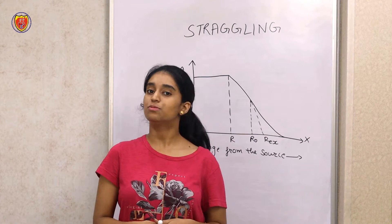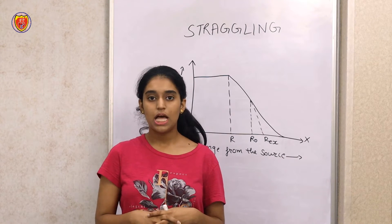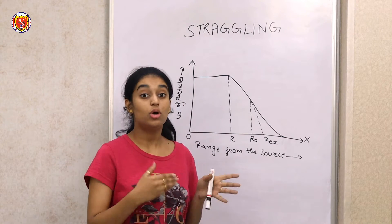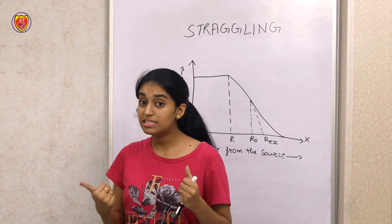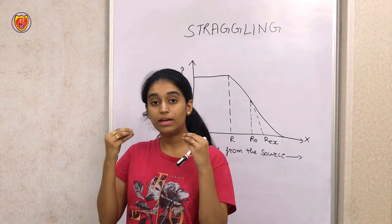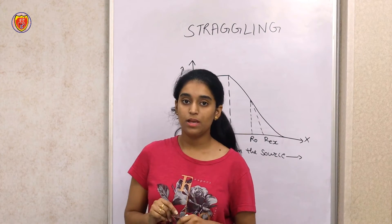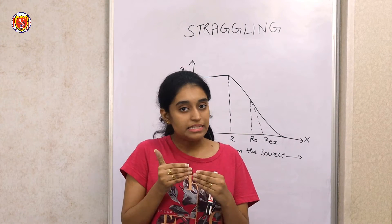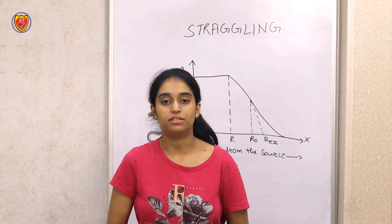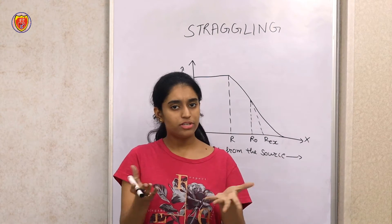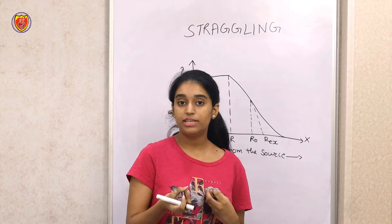What is straggling? First of all, we will talk about heavy charged particles. Every heavy charged particle has its kinetic energy. But when we consider identical charged particles with the same initial kinetic energy, they do not have the same range in the absorbing material. So, the range varies, and there is always a distribution of ranges of these charged particles around some average value, which we call the average range. Straggling is very common in all heavy charged particles.